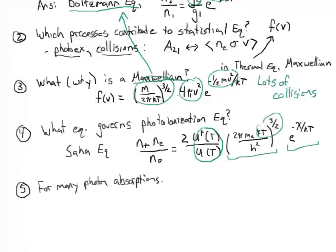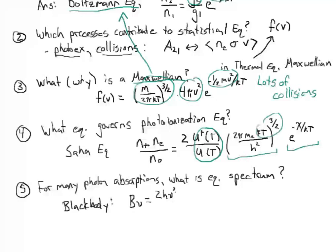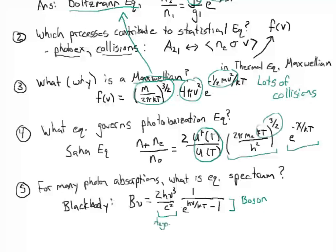In the limit of many photons being absorbed and emitted by a medium — either through photo excitations and de-excitations or through free-free interactions — what is the equilibrium spectrum you achieve? The answer is the blackbody, or Planck's spectrum, with a source function given by 2hν³/c² times 1/(e^(hν/kT) − 1). This term is because photons are bosons, so this is the boson form of the Boltzmann exponential, and the front term describes the degeneracies — all the different ways to have a photon of a given momentum. So a blackbody or Planck's spectrum is an equilibrium distribution of all photon states given some process for redistributing energies between photons.